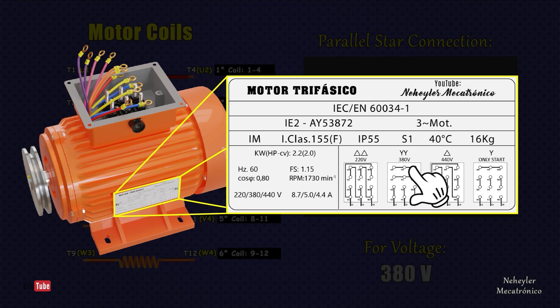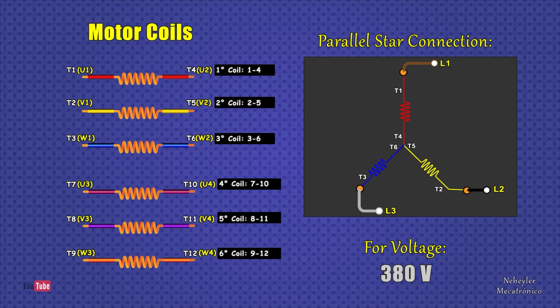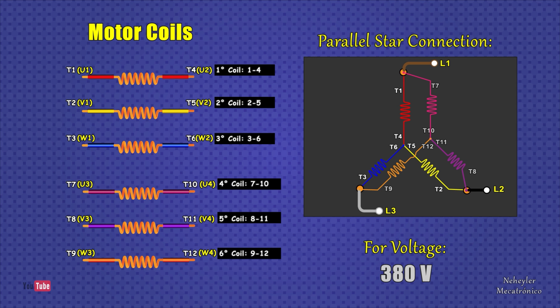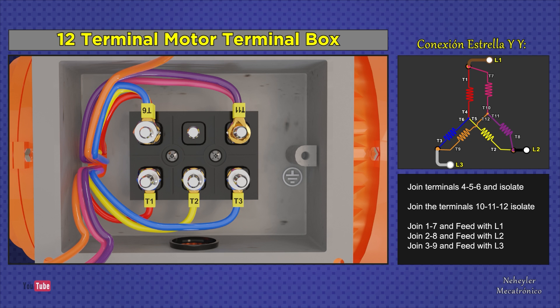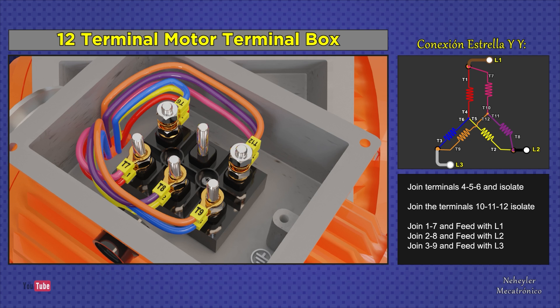For the parallel star or double Y configuration, a star is formed with the first three coils where terminals 4, 5, and 6 must be joined. Then another star is formed with the three remaining coils where terminals 10, 11, and 12 must be joined. These two stars are joined in parallel to feed the three lines. In the motor terminal box, terminals 4, 5, and 6 are joined to form the first star. In another terminal of the box, join terminals 10, 11, and 12. Finally, join terminals 1 and 7 to feed line 1, join 2 and 8 to feed line 2, and join 3 and 9 to feed line 3.